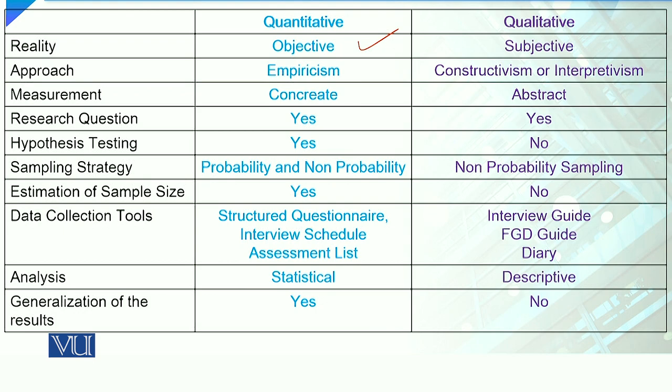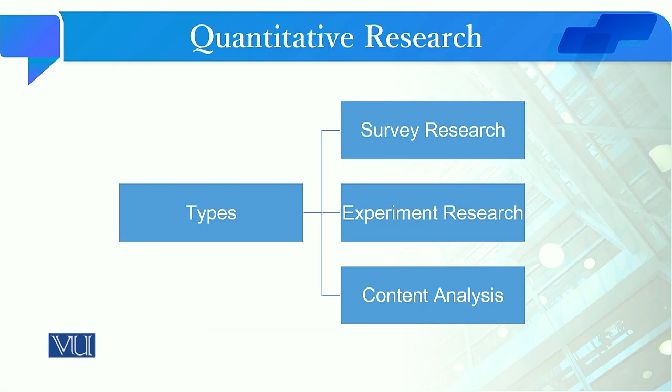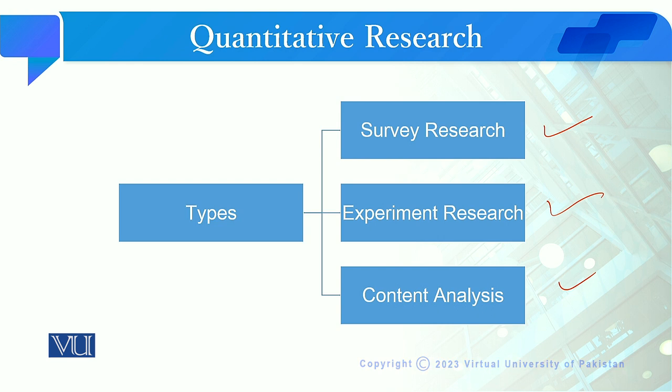There are basically three main research designs or types of quantitative research: survey research, experimental research, and content analysis. You will study all these research designs in a very detailed manner in the coming modules.